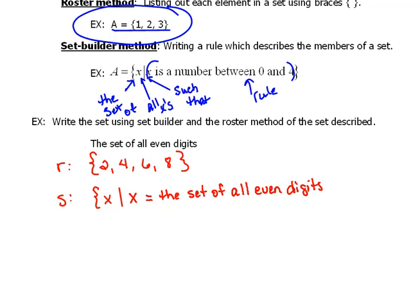So remember, you want to really concentrate on the difference between set builder and roster method. Roster method is listing. Set builder is writing a rule. Don't forget.